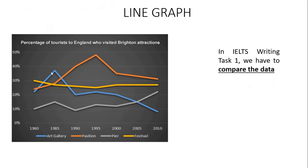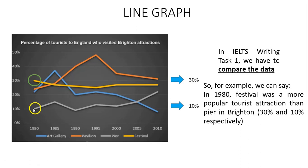The first thing I would like to discuss is line graph. In IELTS Writing Task 1, one of the things we have to do is compare the data. For example, in 1980, the percentage of tourists to England who visited Bratton attractions — especially festival — is 30%. As for the percentage for pier, it's only 10%. So we can say: in 1980, festival was a more popular tourist attraction than pier in Bratton — 30% and 10% respectively.